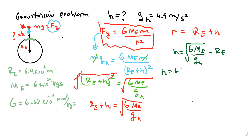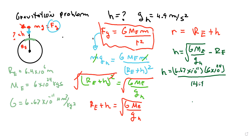So h is going to be the square root of 6.67 times 10 to the minus 11 times 6.6 times 10 to the 24, divided by 4.9 — I'll work out the units at the end — minus the radius, which is 6.4 times 10 to the 6.